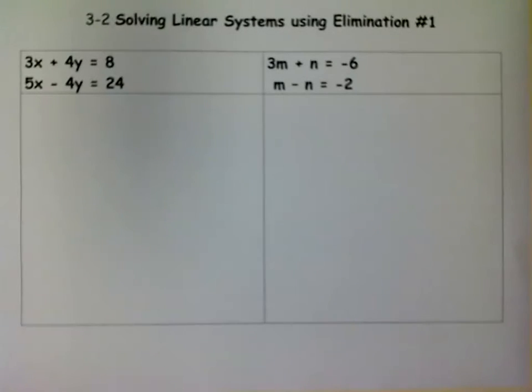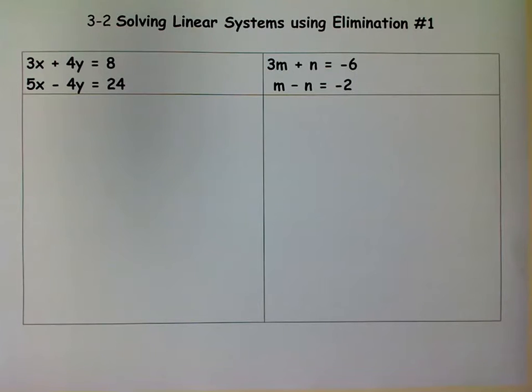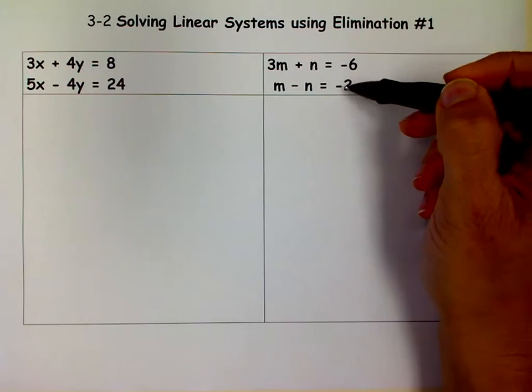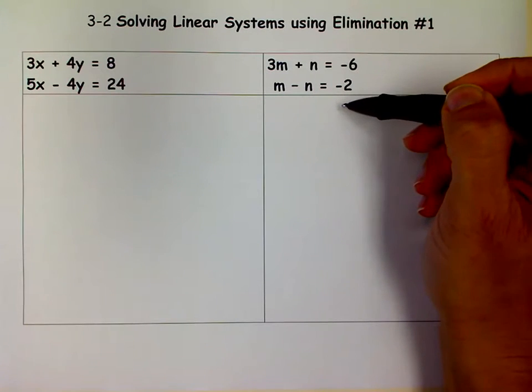Greetings, this is M Squared, and we're going to solve some linear systems using elimination. Keep in mind, linear systems mean you have two equations of lines, and you're finding out where these two lines intersect. That is your answer.